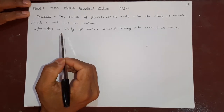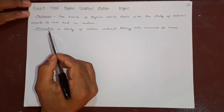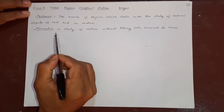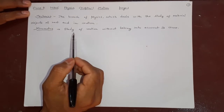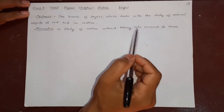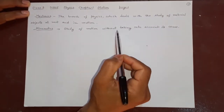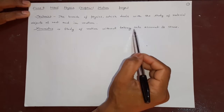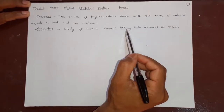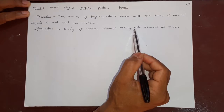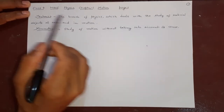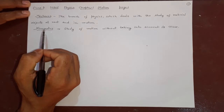Kinematics is another study — study of motion. Again, but this is a little more precise. It is the type where we want to study the motion without knowing the reason of the motion, without taking into account the cause or the reason. These are the two things: mechanics and kinematics.